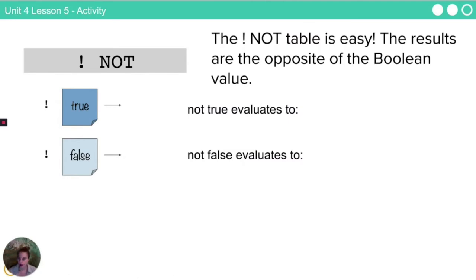The not table is pretty easy. The results are the opposite for each Boolean value. So if we say not true, we mean false. If we say not false, we mean true.